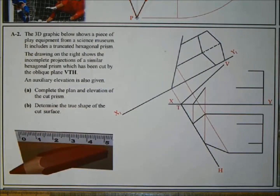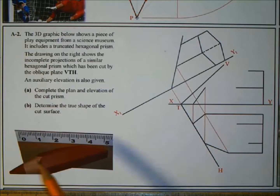Hi and welcome to another DCG tutorial. Today we're working on 2014 paper section A, question A2. The 3D graphic shows a piece of play equipment from a science museum, and it includes a truncated hexagonal prism.